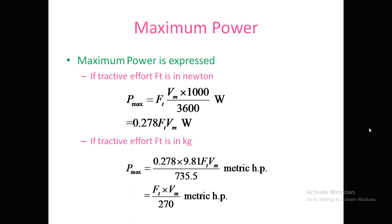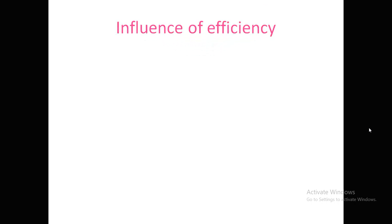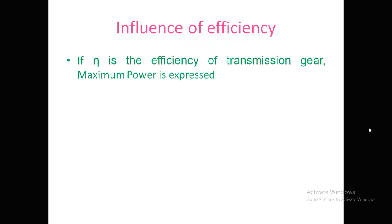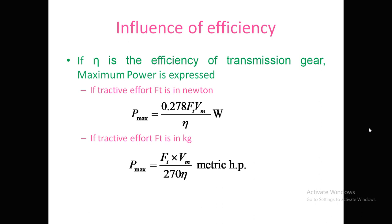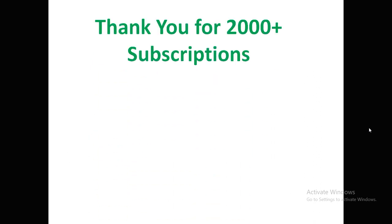If transmission gear efficiency eta is considered, the formula becomes: P_max equals 0.278 × Ft × Vm divided by eta watts when Ft is in newtons, or Ft × Vm divided by 270 × eta metric HP when Ft is in kilograms.